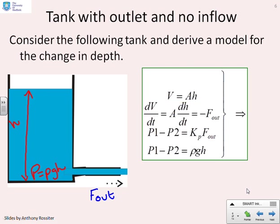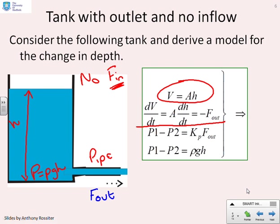So what have we got? We've got the volume of the tank is ah. We've got the rate of change of volume with time is a dh/dt, which must be minus flow out because we've got no f in. That's what we've said, no inflow. We also know, because we've got a pipe down here, that the flow out through the pipe is going to be based upon what's the pressure p1 at this end, what's the pressure p2 at this end. And you're going to look at those differences in pressures, p1 minus p2, and that's going to give you kp times f out.